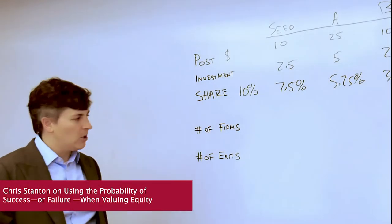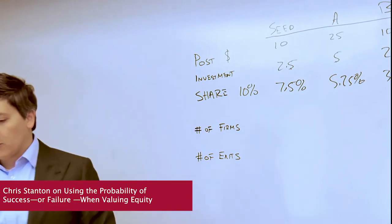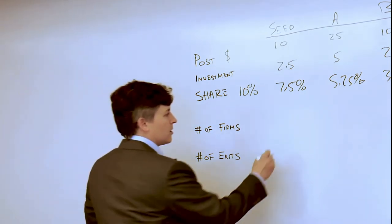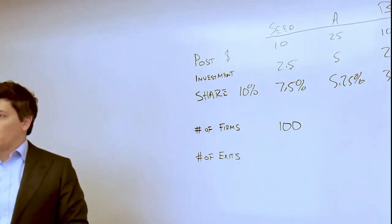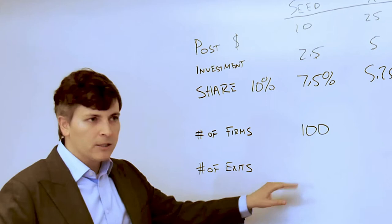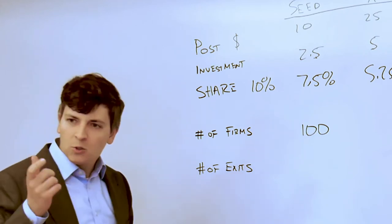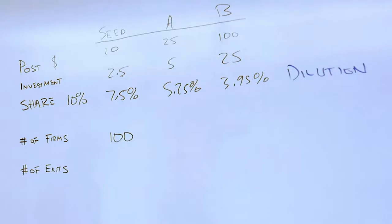The second bit of this puzzle is the probability of success. If we start with 100 firms that raise seed money, our research shows that clearly not all of these firms are going to be successful. If you take into account what the probability of success is, that's going to enable you to think about some central tendency for what the average valuation is going to be once you've taken into account dilution.